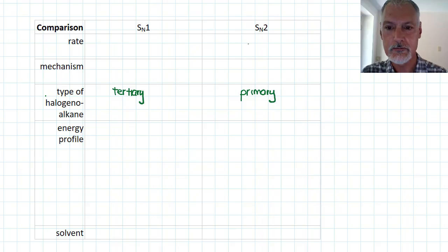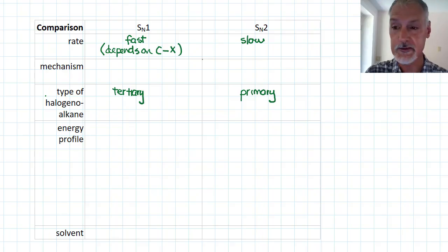It turns out that SN2 are relatively slow mechanisms, but our SN1 is relatively fast. But it does depend on the strength of the carbon-halogen bond. So whenever that carbon is connected to, if it's a weak bond, it'll happen fast. If it's a strong bond, it'll be a little bit slower. But generally speaking, SN1 mechanisms with tertiary are much faster.